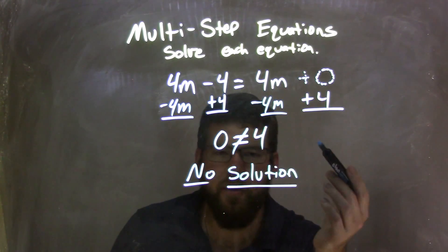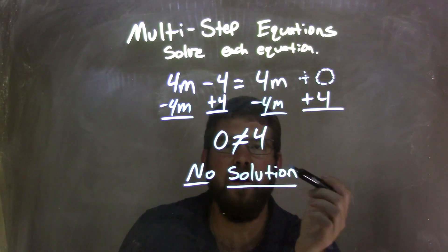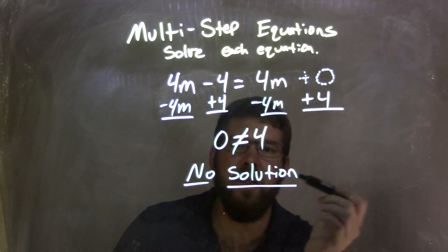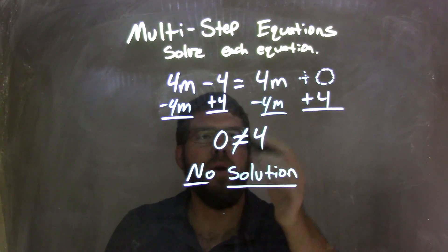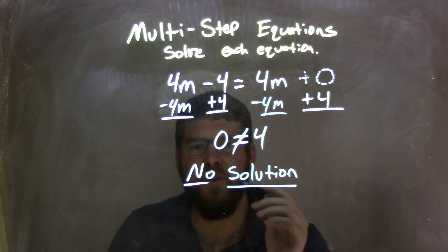Well, 0 does not equal 4, right? So that slash would say it's not equal to. When we get a problem like that, if we're solving these and they don't equal, our answer is no solution. There is no number that we can plug in for m that makes this a solution. So our final answer here is no solution.